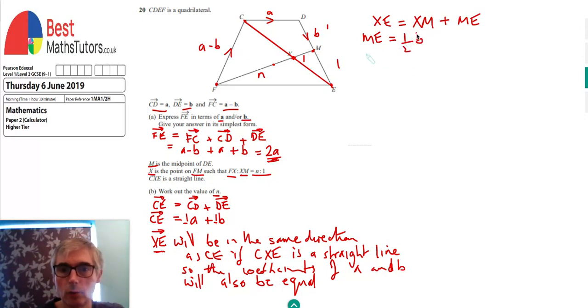Now I'm going to find what is XM. XM is a fraction of the line FM. The fraction is one out of the full length, which is N plus one. So XM is one over N plus one multiplied by FM. So now I need to find FM.